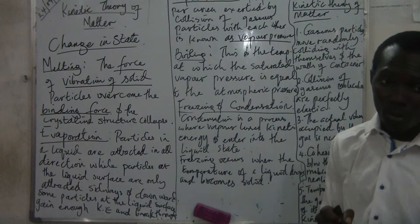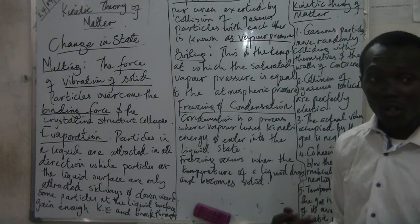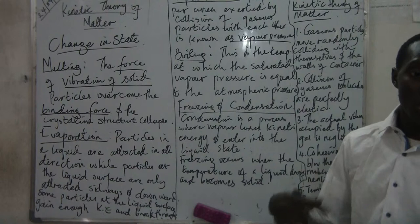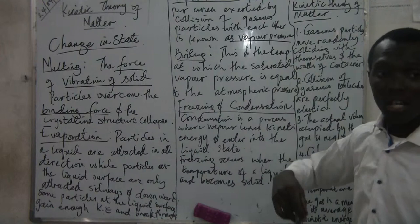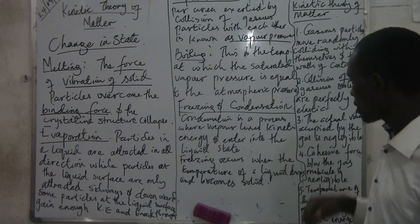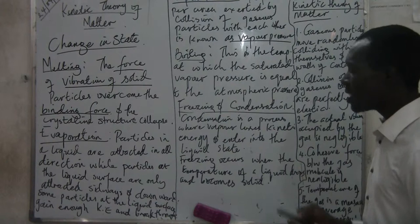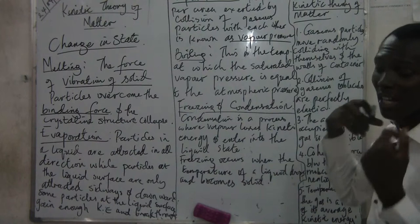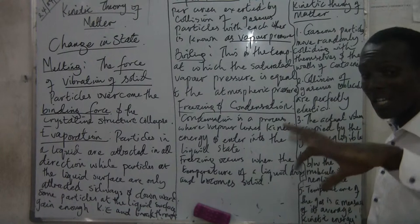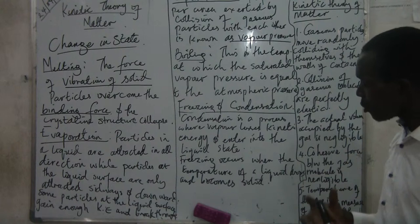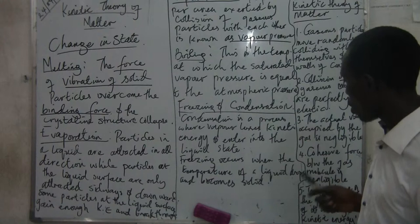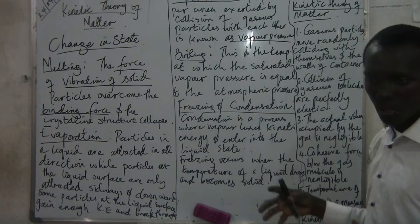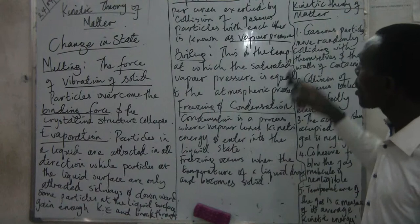However, this assumption is not true for most real gases. When gases collide randomly, a great amount of kinetic energy is converted to heat. But the assumption of kinetic theory of matter is that none of this kinetic energy is lost as heat. The next assumption is that the actual volume occupied by the gas molecules is negligible. We also assume that the cohesive force — the force of attraction between gas molecules — is negligible.